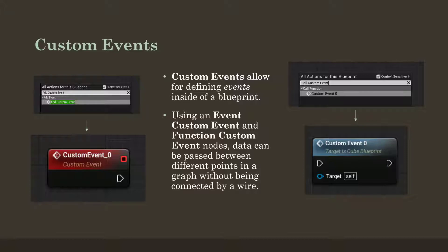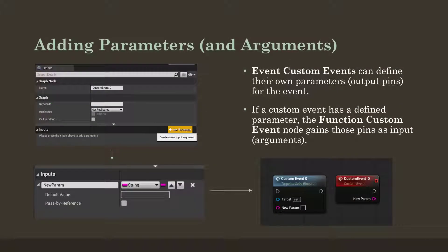As we will see when we jump to Unreal, we can define a custom event, then call that custom event, and pass data within the same graph. We can also define parameters and arguments for these custom events within the same graph — we define the custom event, then define what data we want to receive from the event when it happens, and then call the event and pass that data.